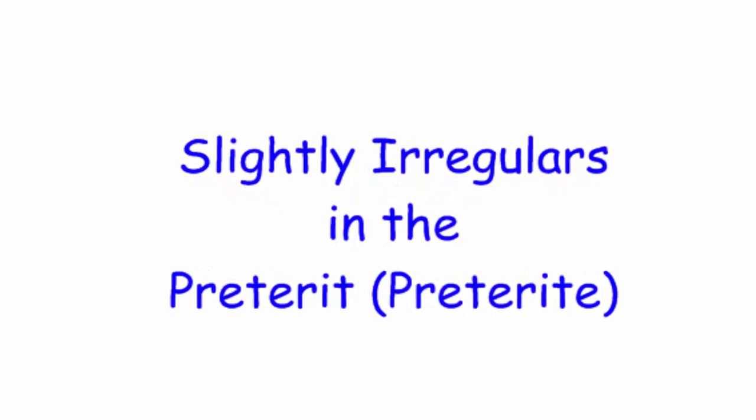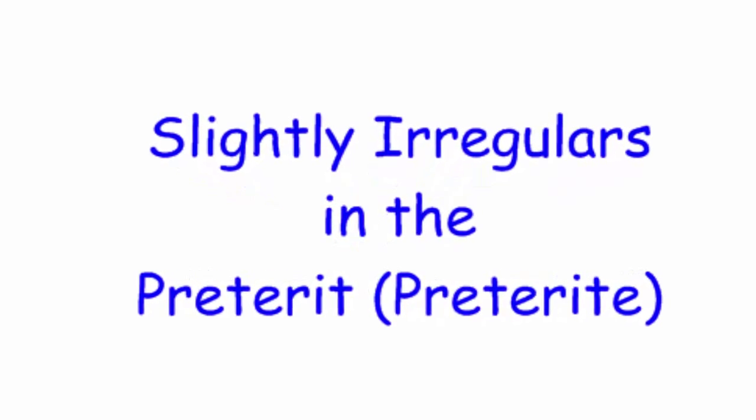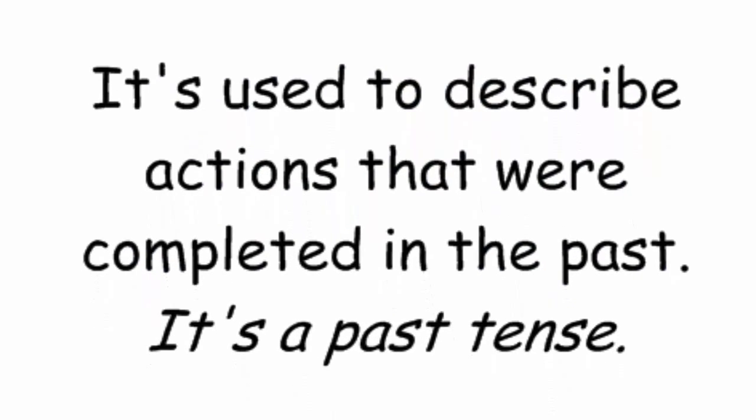Let's do a quick reminder, a quick refresher of what the preterite is. The preterite is used to describe actions that were completed in the past. It's a past tense. When we talk about pretérito, we're talking about a past tense for actions that have a specific beginning and a specific end in the past. Not things that used to be, not things that were going on, but — bam — happened in the past.